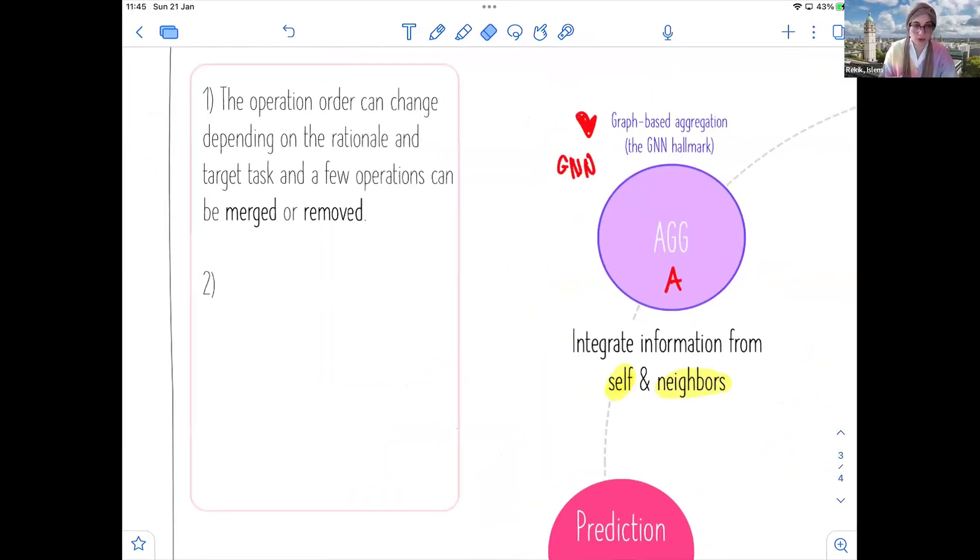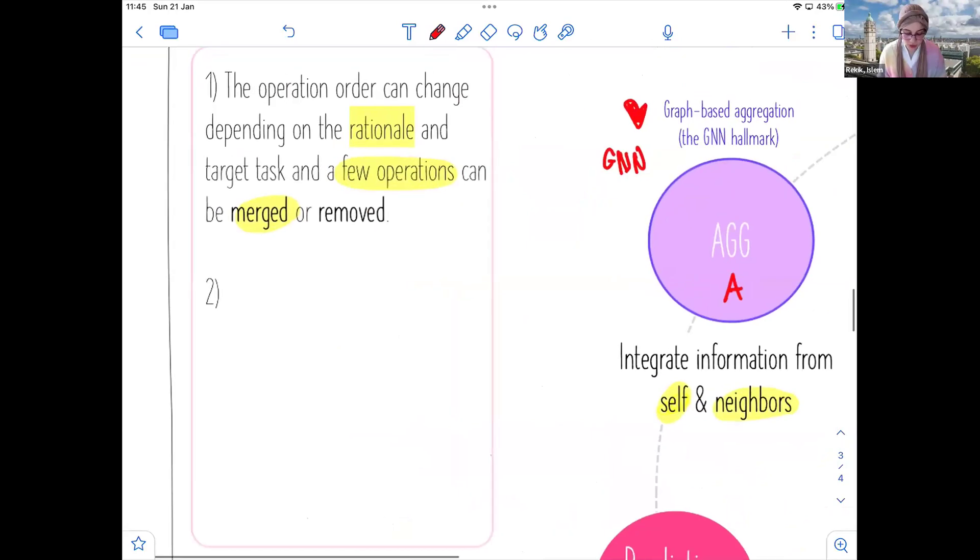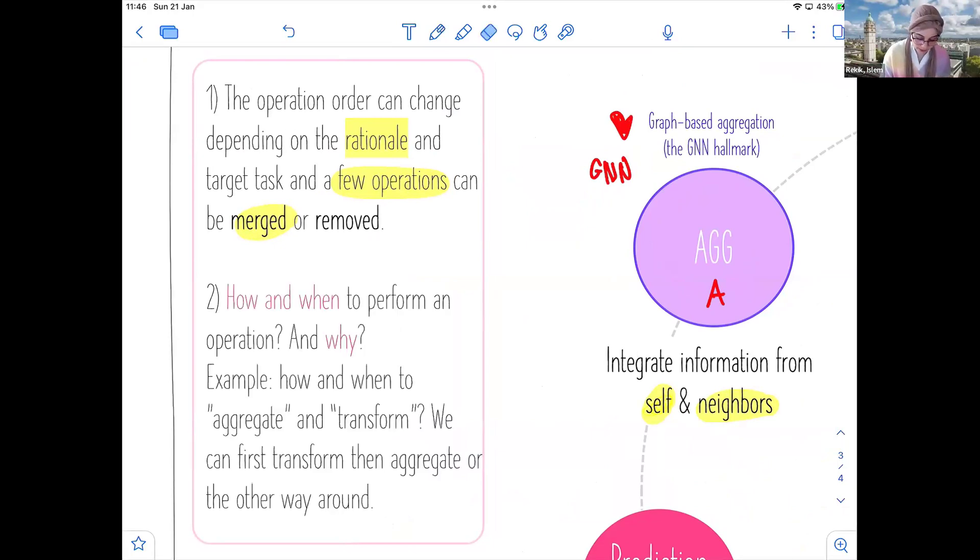Sometimes this comes in this order, other times, the order can change. There are important remarks here I want to add. The first one is that the operation order, the order in which we do these operations, it can change depending on the rationale and the target task. And then also a few operations can be merged or completely removed. You can remove a dropout. You can use only what we have used in a naive GCN is basically these three. And then we added later on the prediction head for the task. So, these operations here, they're not necessarily executed in the order I mentioned here. The order can change. We can merge a few operations, combine them together. We can remove a few operations in a layer, in a GCN or GNN layer, one layer. And then you define one layer and then you can stack up multiple layers to repeat the same operation, series of operations over and over again after you define them.